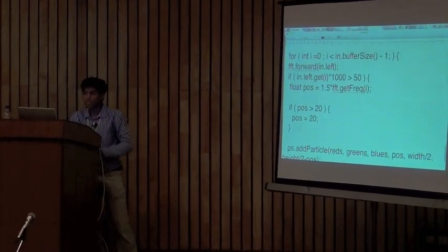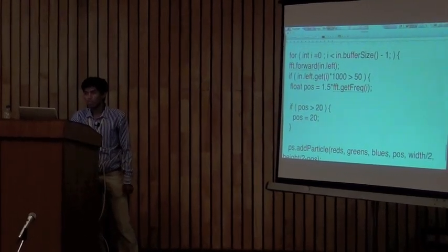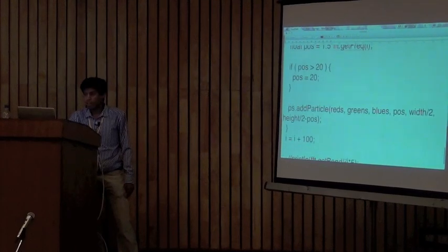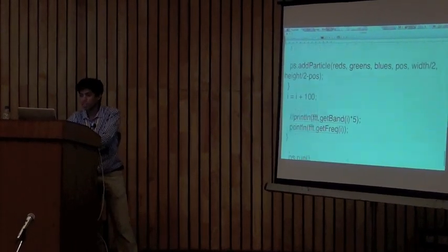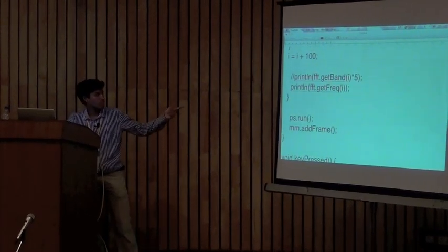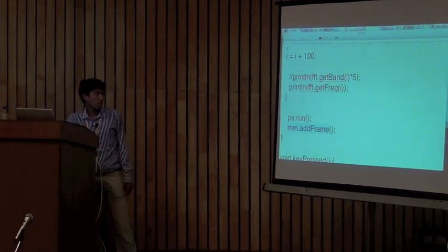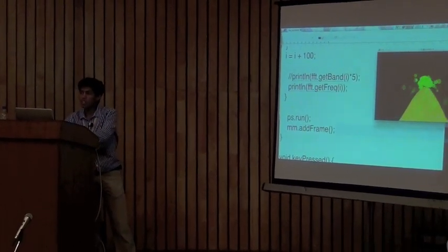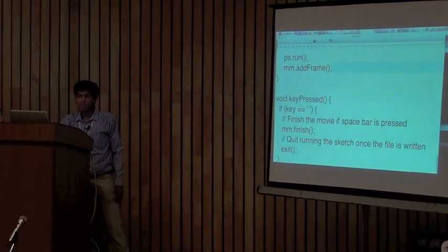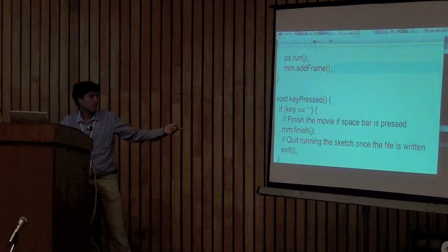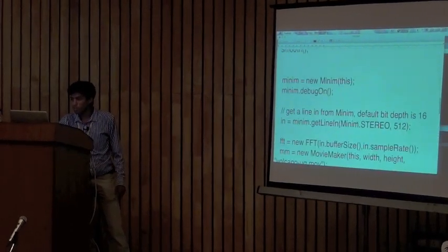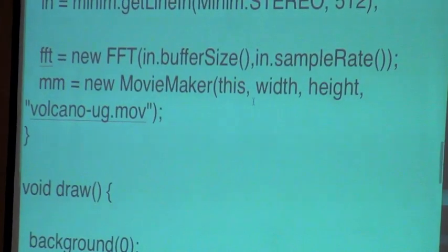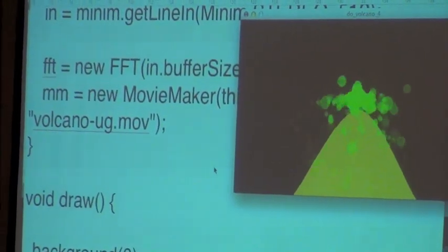This shows where I'm getting the frequency from the input channel. The buffer size of the incoming signal is looped so the visualization runs while input is on. I've also added a MovieMaker object with an addFrame() call, which takes each frame of the visualization and captures it into a .mov file. Once I press the spacebar, the movie is saved. I'll show the recording settings in the next example.